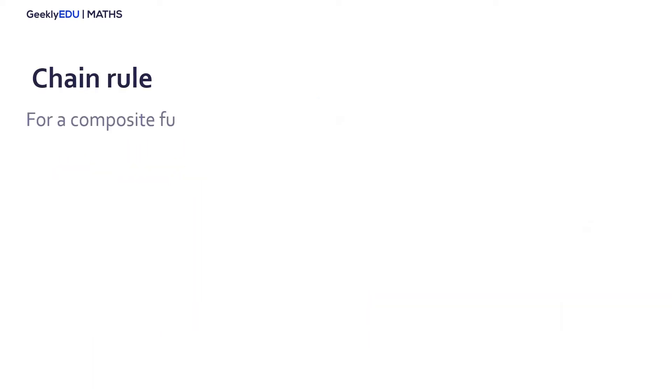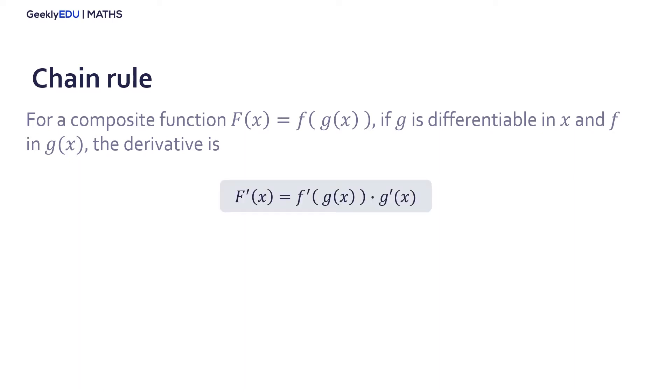For a composite function like the one we saw before in the form F(x) = f(g(x)), being g and f both differentiable functions, the derivative using the chain rule is the derivative of the function f evaluated in g times the derivative of g.